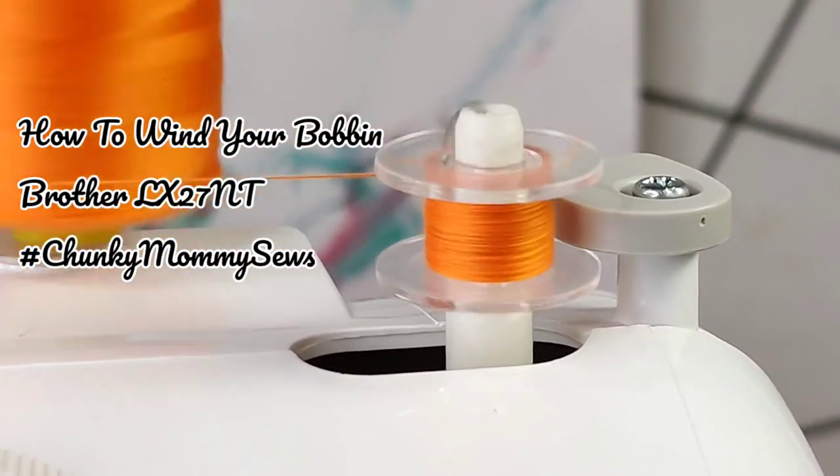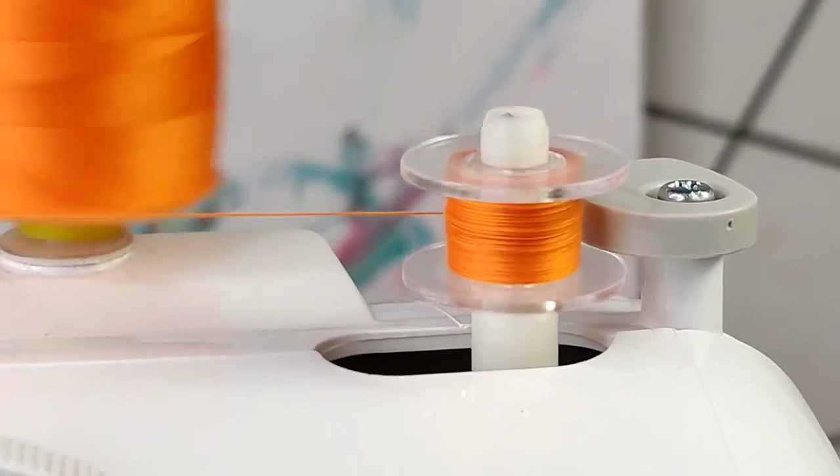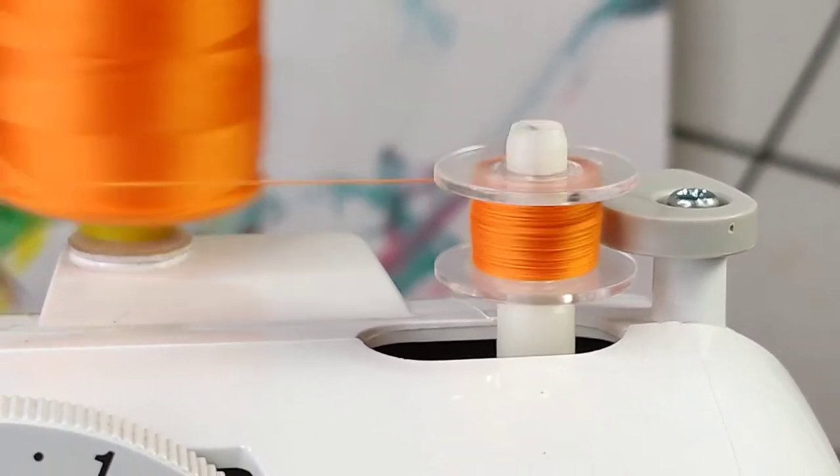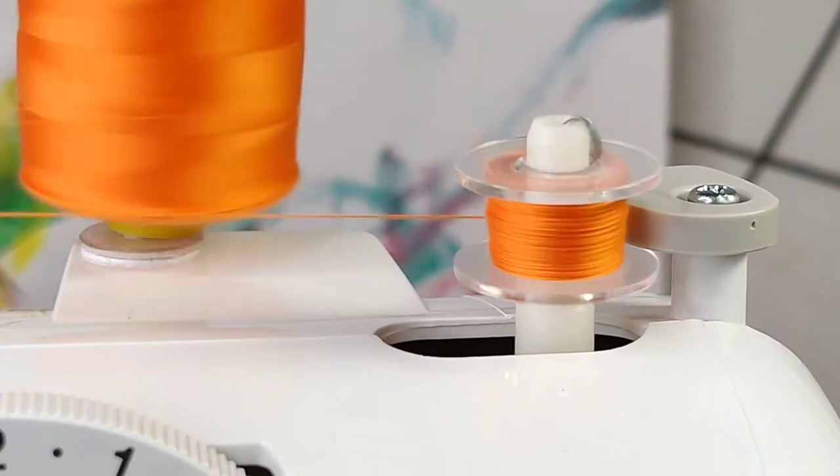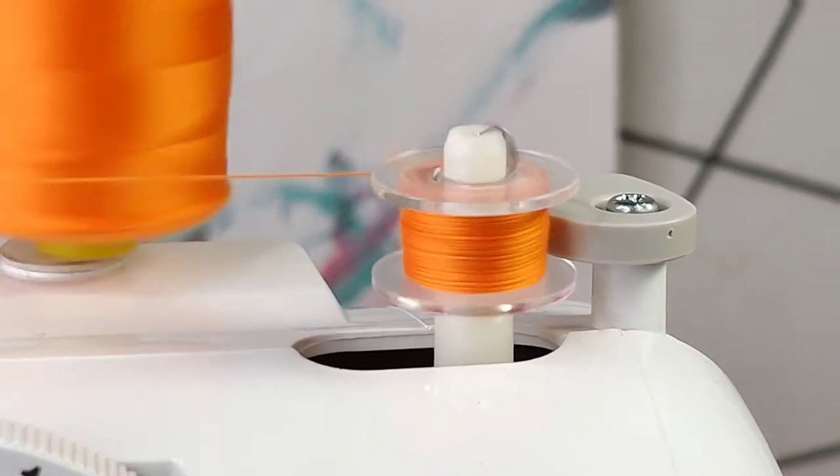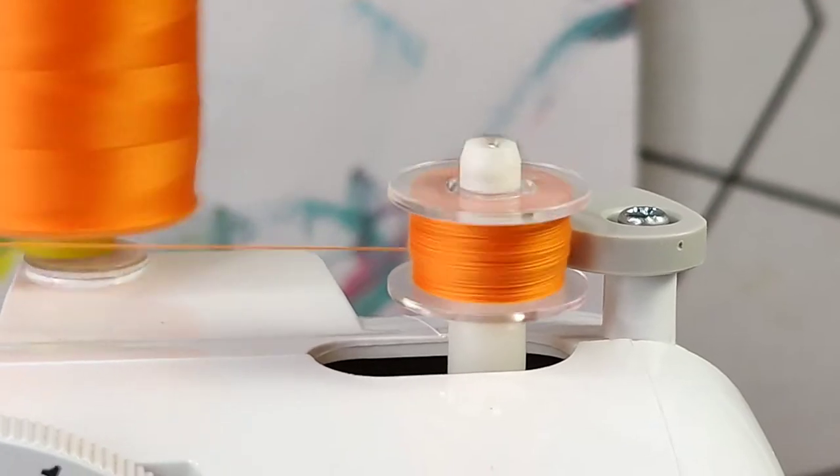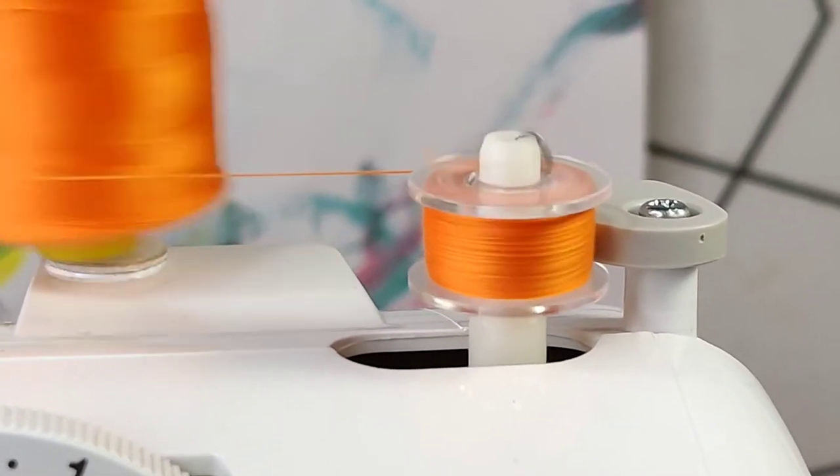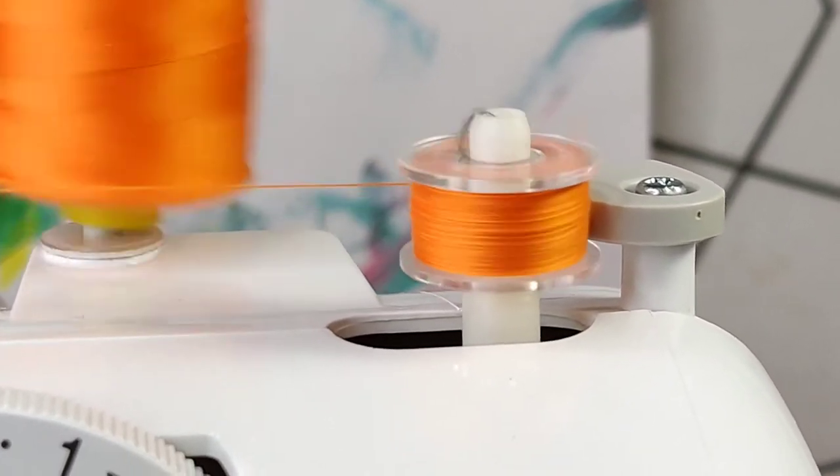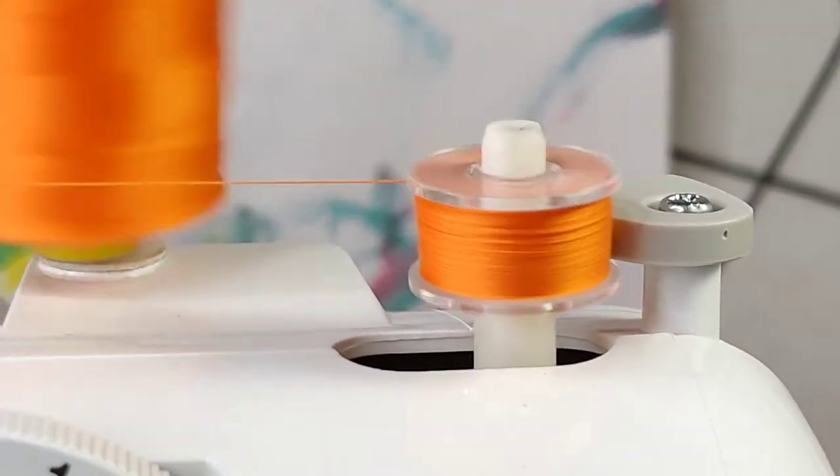These steps may also be similar to most sewing machines out there so you can use this video as a guide as well. Winding your bobbin with thread is one of the first steps before you can start sewing. Hopefully this video will help those who are just starting or those who feel intimidated by the process. Let's start!